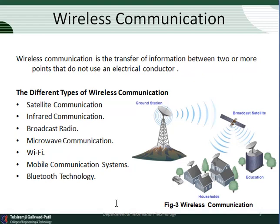Satellite communication allows us to access information from ground stations. Broadcast radio is used for accessing frequencies for music, local news, and current situations. Microwave communication, Wi-Fi, and mobile communication systems allow sharing of information such as voice, audio messages, and SMS. These are all services provided by mobile computing, up to Bluetooth technology. Further topics will be covered in the next video — thank you.